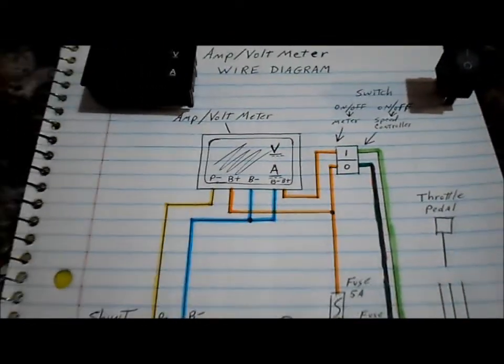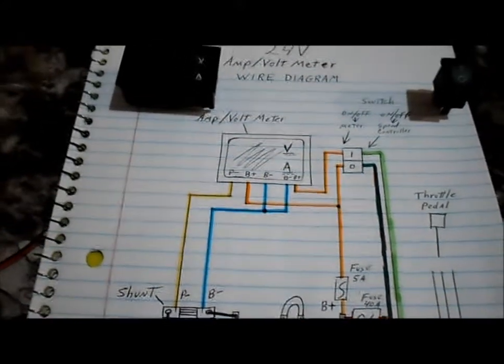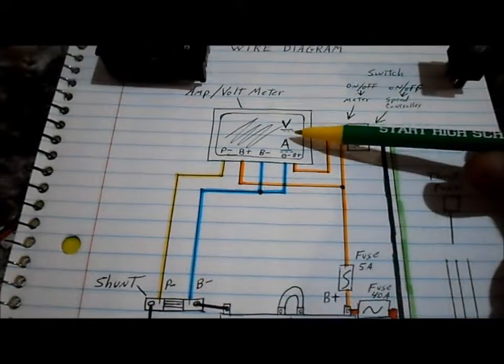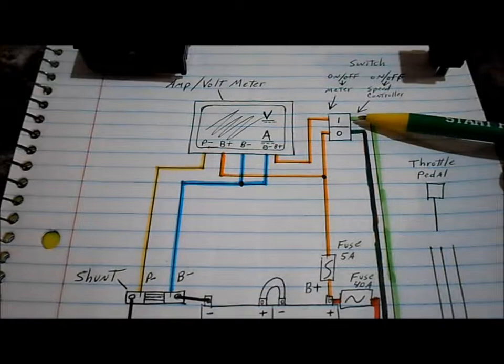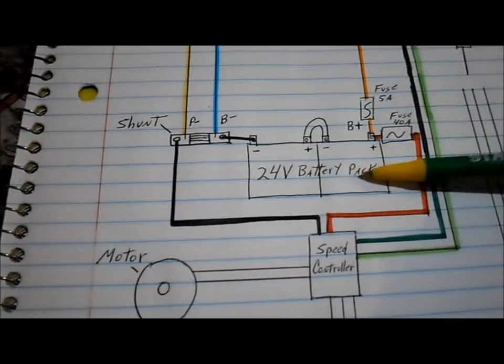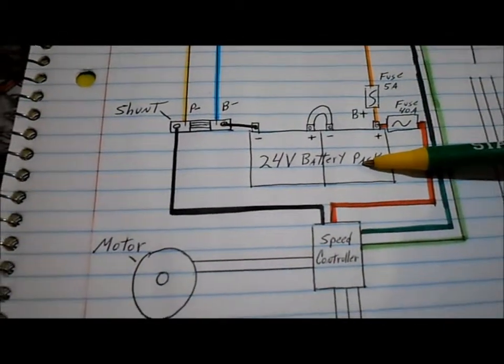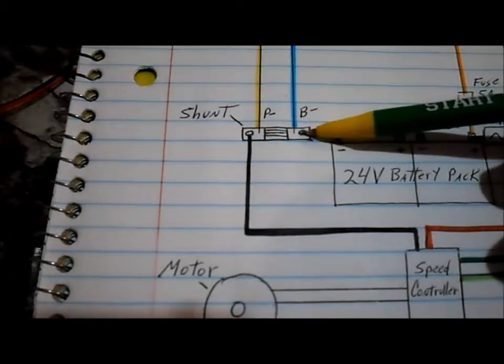Here is the diagram for our amp volt meter. This is our amp volt meter. This is our switch. This is our 24 volt battery pack. This is our shunt.